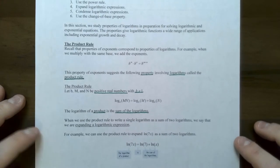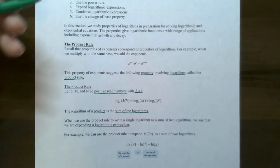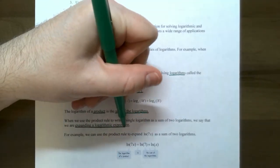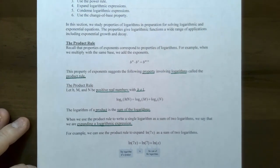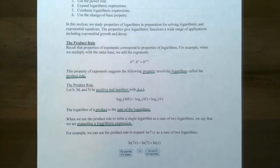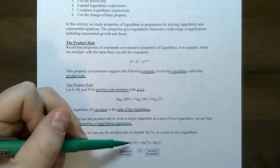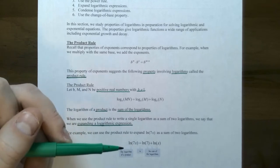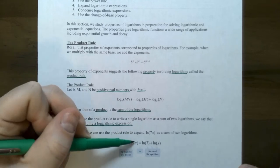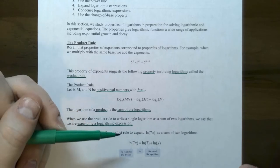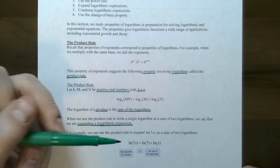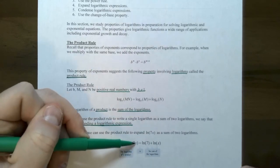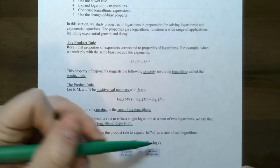Keep in mind that logarithms are exponents, so you're adding the exponent from the first expression and the exponent from the second expression. This is called the product rule — you rewrite a product into a sum of logarithms. Anytime you rewrite a logarithm into two or more logarithms, it's called expanding a logarithmic expression. Here's an example: we take the natural log of seven times x and rewrite it. The argument is a product, so it becomes natural log of seven plus natural log of x.